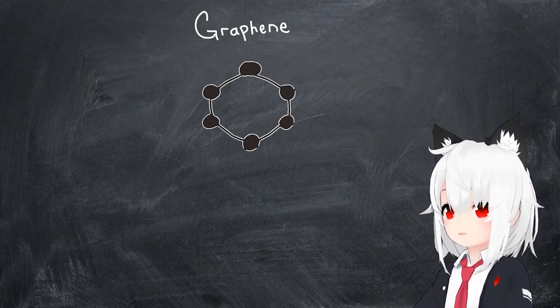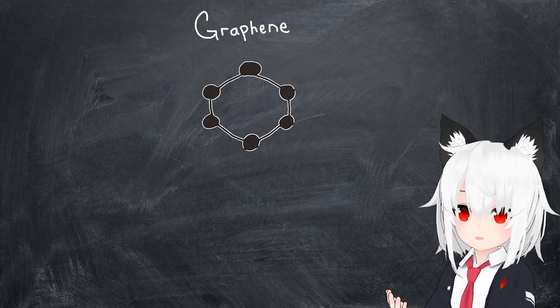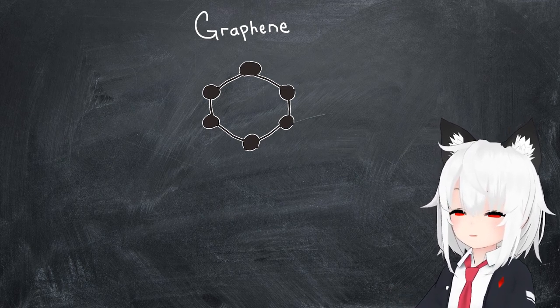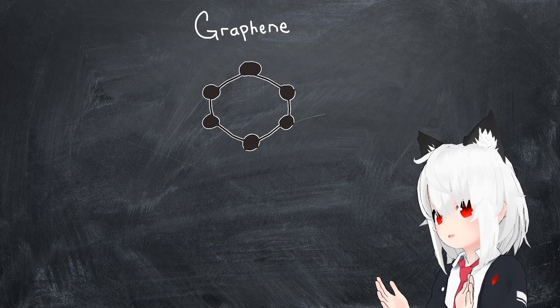So if we want to observe non-trivial Berry curvature effects in graphene, we'd first need to break its inversion symmetry, and this can be done in a few ways.